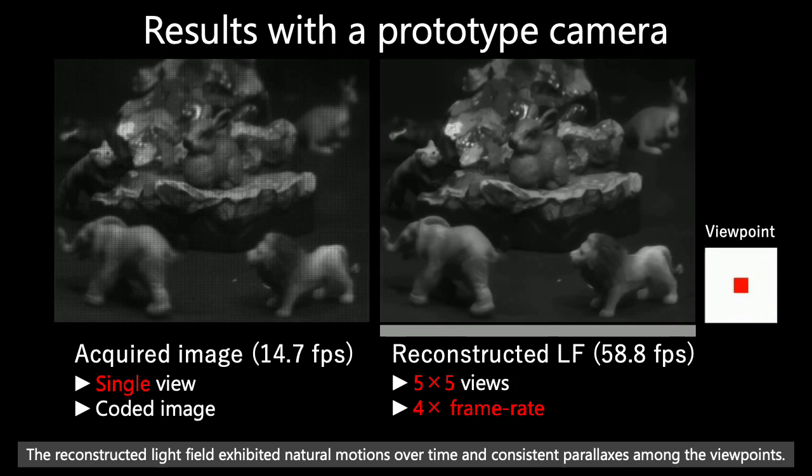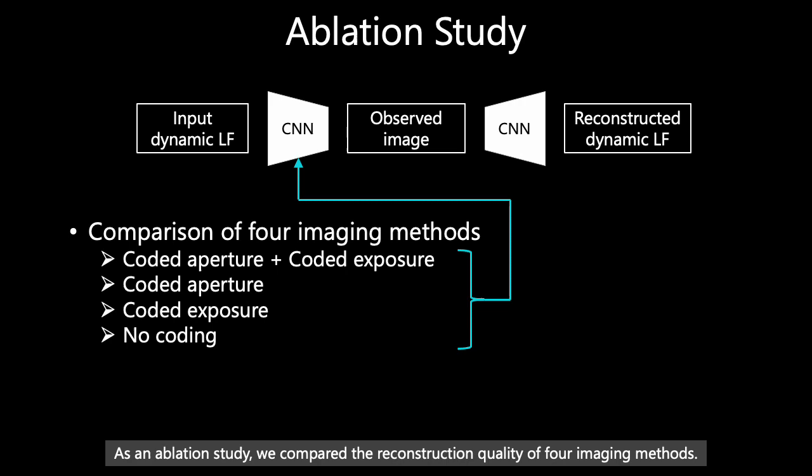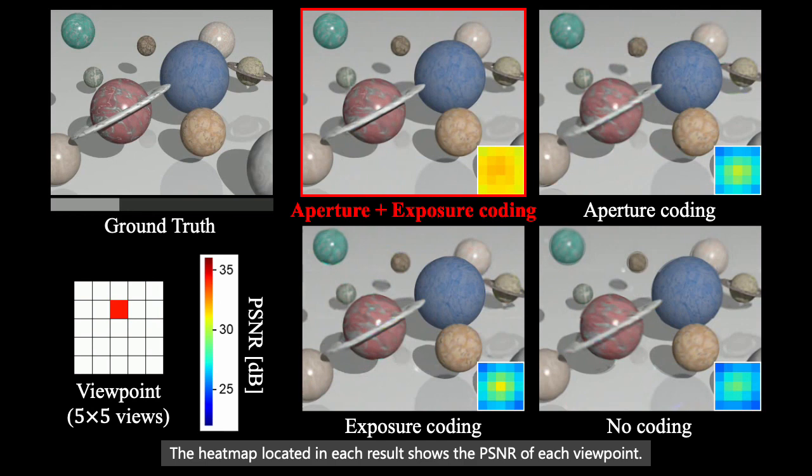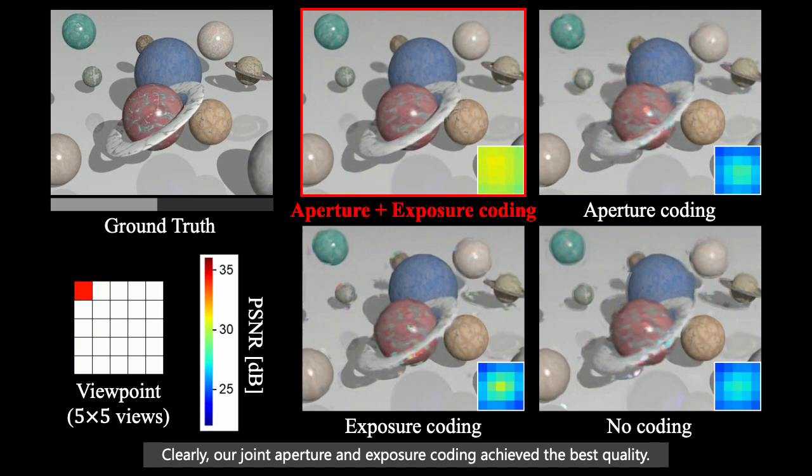As an ablation study, we compare the reconstruction quality for 4 imaging methods. Here are the results. The heat map located in each result shows the PSNR of each viewpoint. Clearly, our joint aperture and exposure coding achieve the best quality.